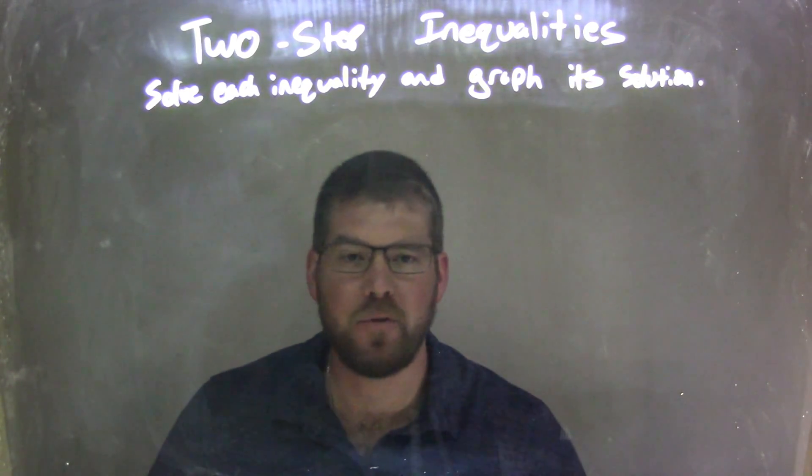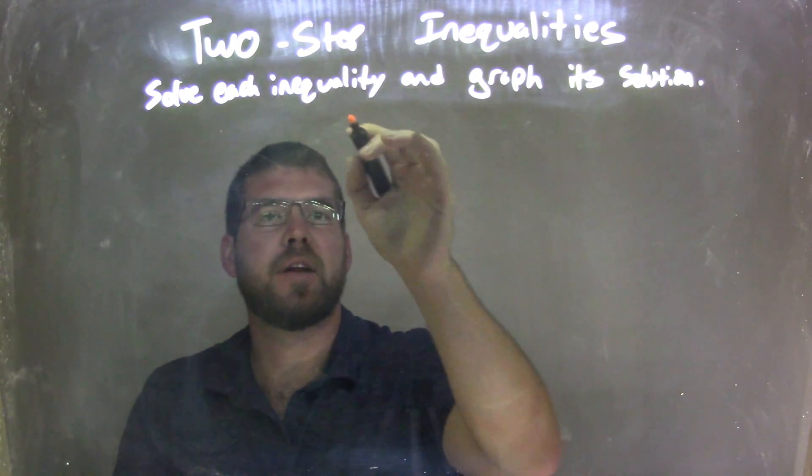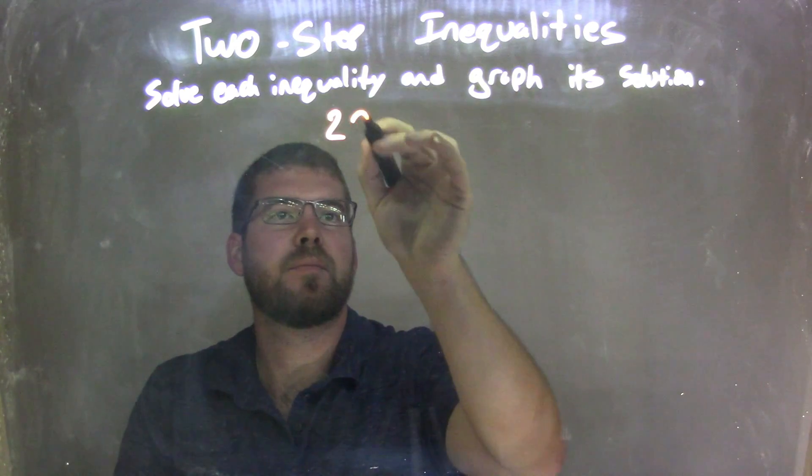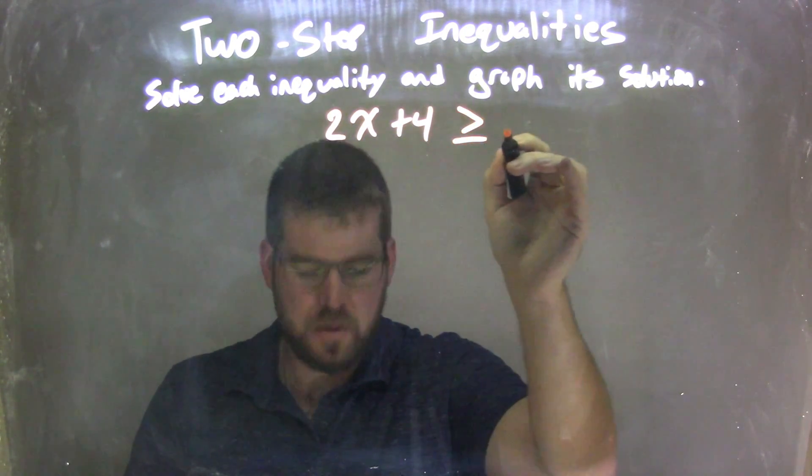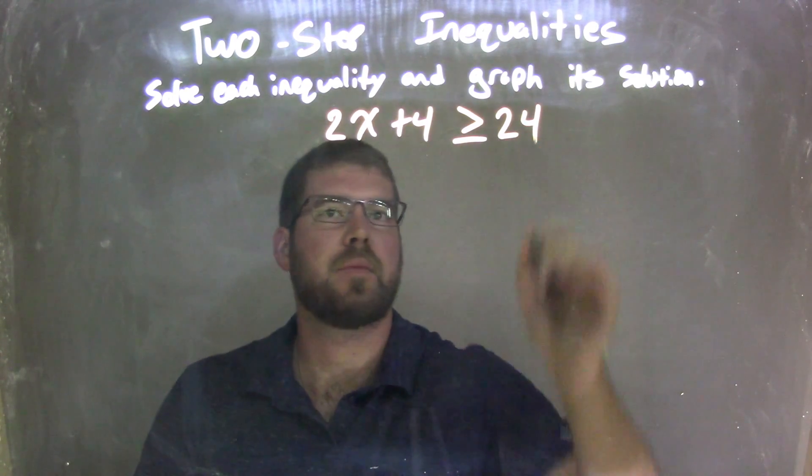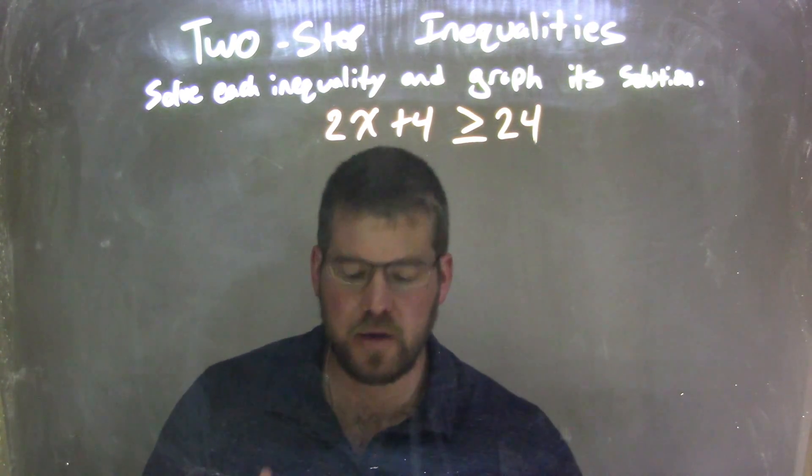I'm going to solve each inequality and graph a solution. So if I was given this inequality, 2x plus 4 is greater than or equal to 24. So I have 2x plus 4 is greater than or equal to 24.